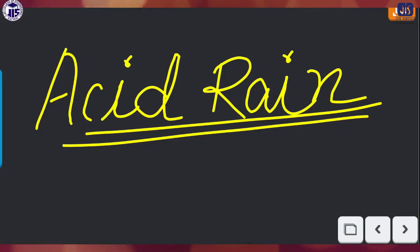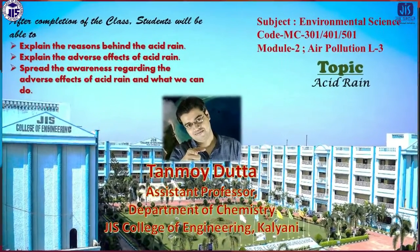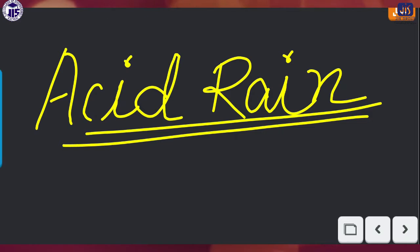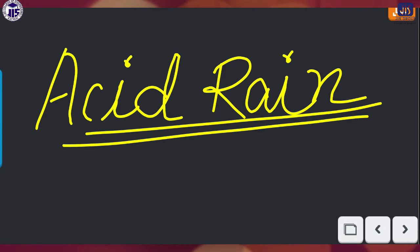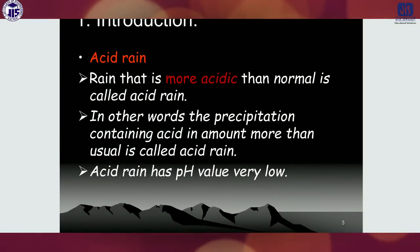Hi students, myself Tanmay Dotto, assistant professor, department of chemistry, GIS College of Engineering. Welcome you all in my class of air pollution. Today we will discuss about acid rain — what are the reactions, what are the acids which are mainly involved to produce the acid rain, how these acids are produced, and what are the adverse effects of the acid rain.